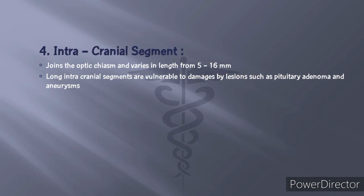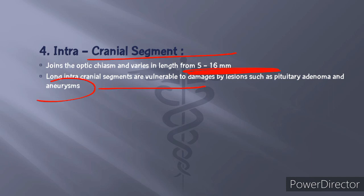The fourth segment is the intracranial segment, which joins the optic chiasma and varies in length from 5 to 16 millimeters. This segment is vulnerable to damage by aneurysms and tumors such as pituitary adenoma and other different types of tumors.